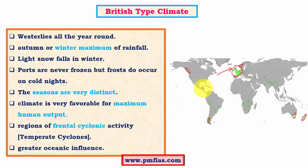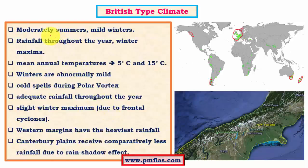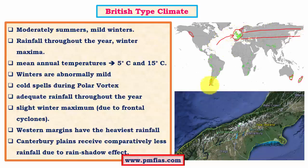The seasons are very distinct — this is one important characteristic feature of the temperate climatic regions. This particular region is favorable for maximum human output because of the moderate climatic conditions. In tropical regions, high temperatures are not ideal for human adaptation, whereas in the British type of climate, rainfall is well distributed all around the year and the temperature is very mild, making it best suited for human productivity. This region has high frontal cyclonic activity which brings good amounts of rainfall especially in winter months, and the oceanic influence keeps climatic conditions moderate.